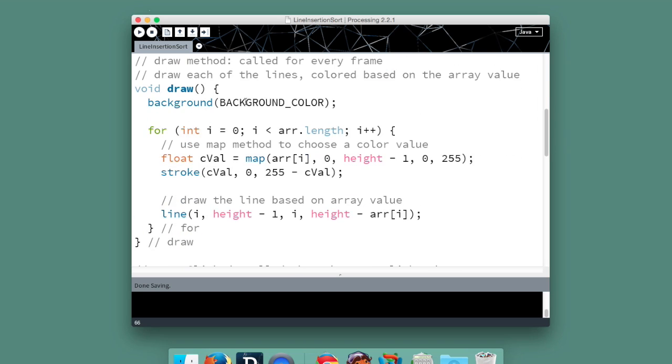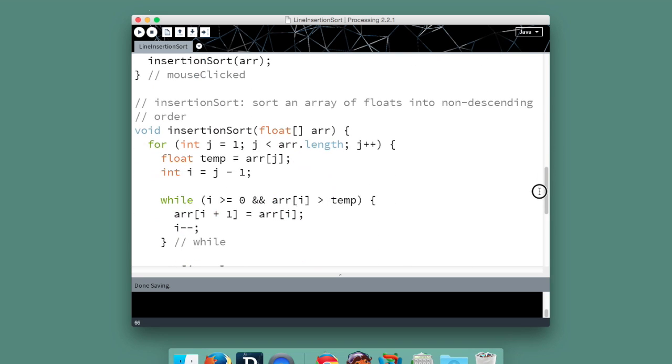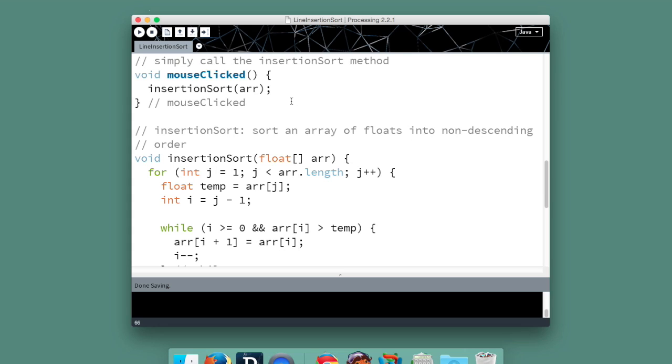And then in our draw method, erase the background. And this is the code that we looked at just before to scale color value and to draw the line. When the mouse is clicked, we'll do the insertion sort algorithm to rearrange our lines.